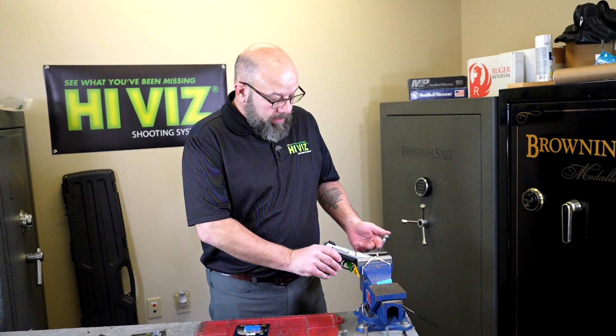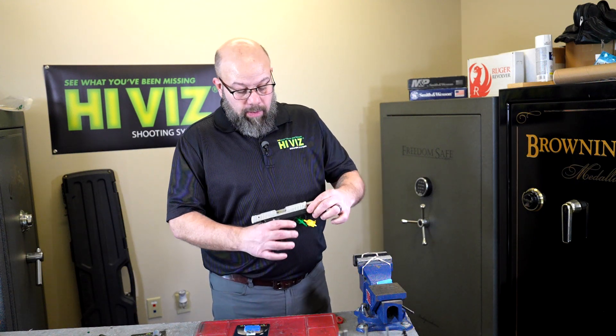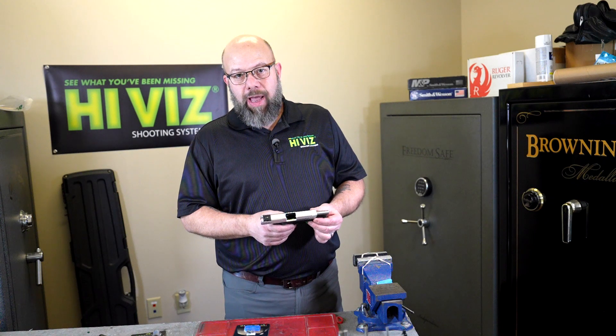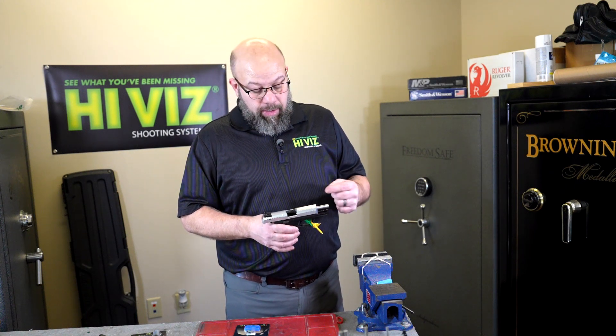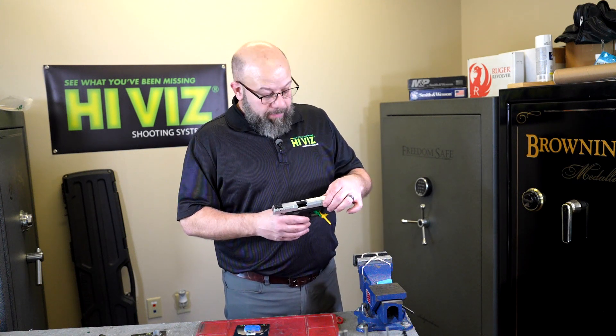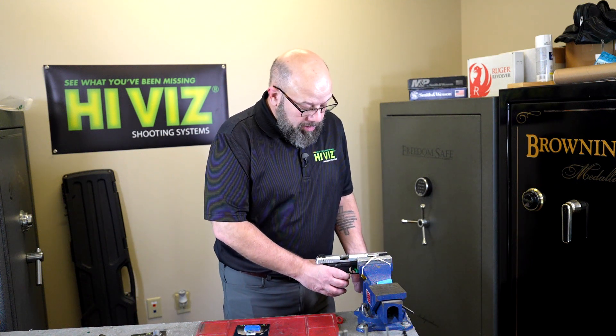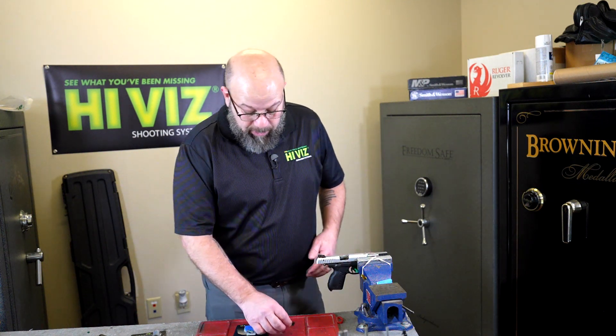So I have the gun here. Of course, it's unloaded. We don't really have to remove the slide for this type of installation. I've already removed the front sight, so let's go ahead and install this front sight. I'm just going to clamp it up in the vise to make it a little easier.